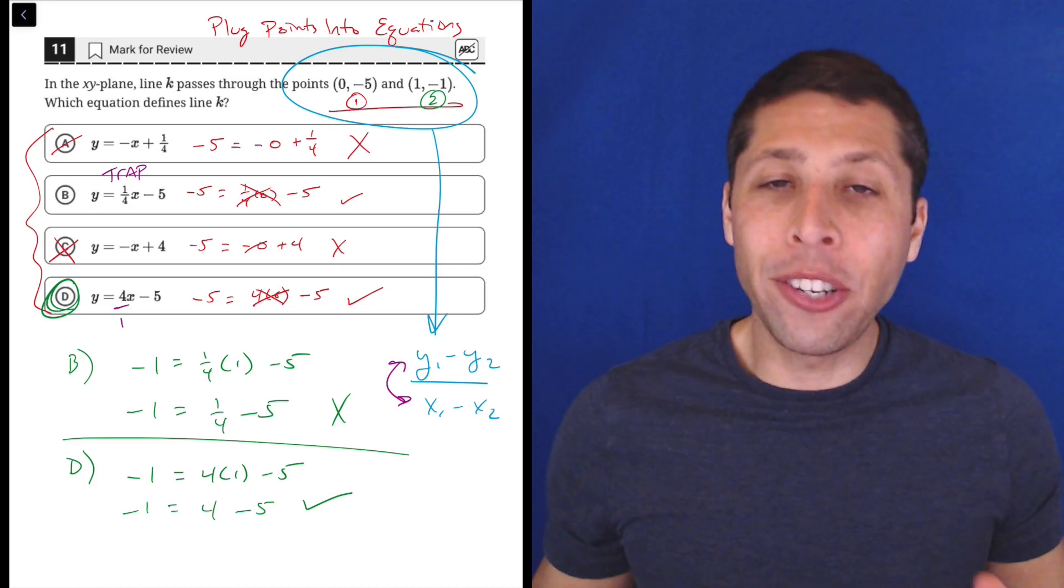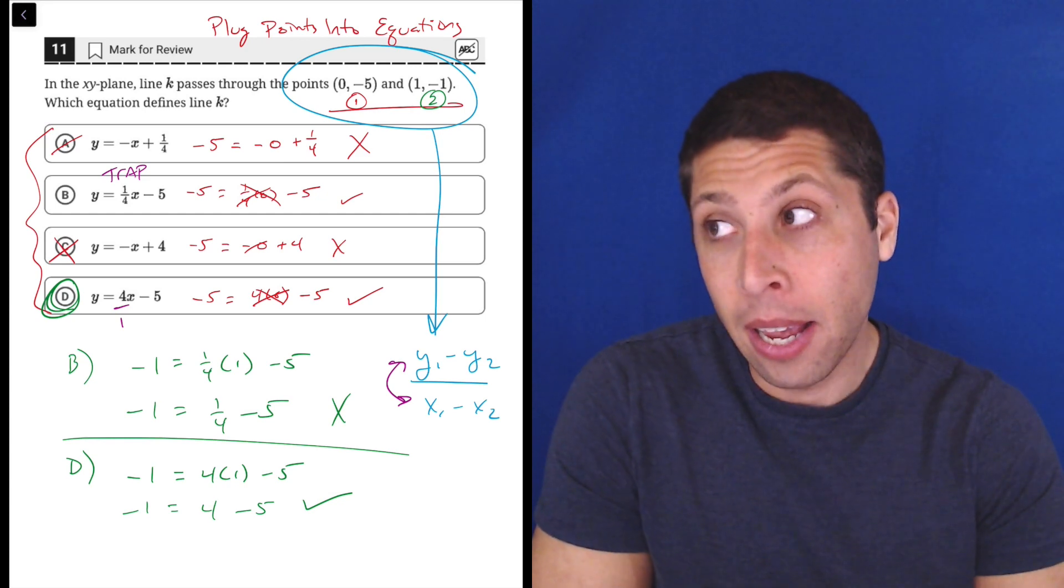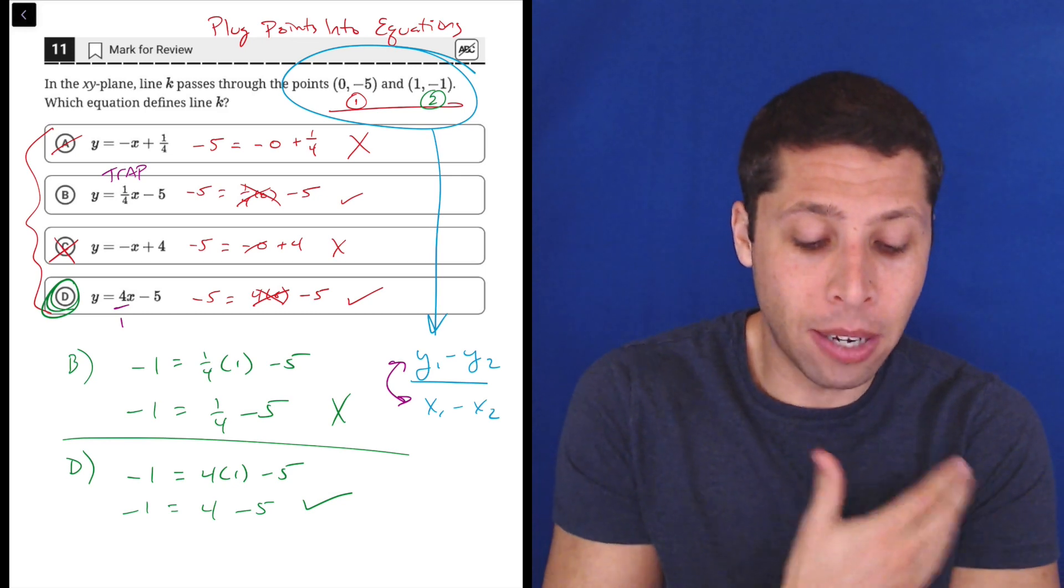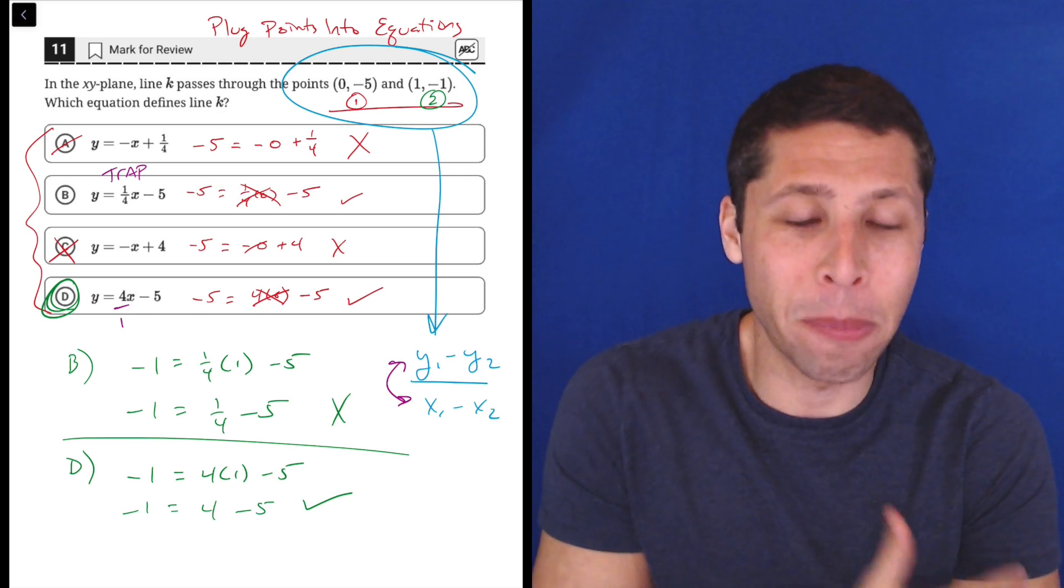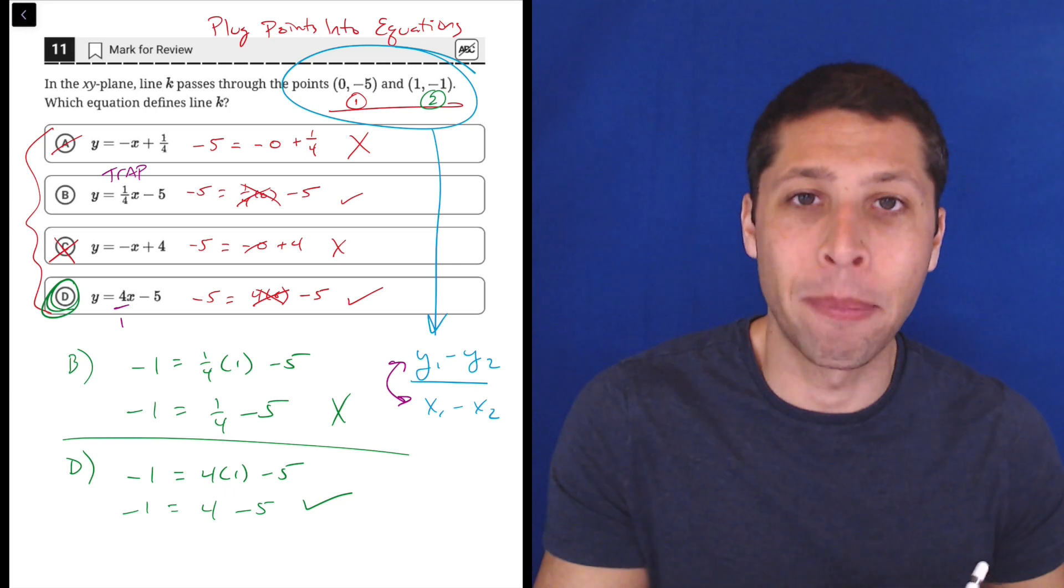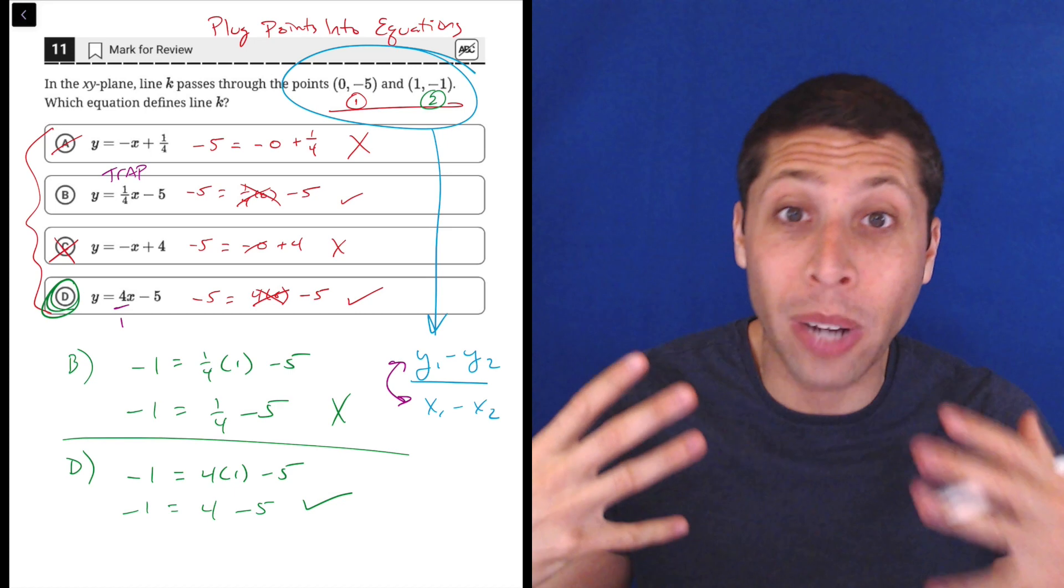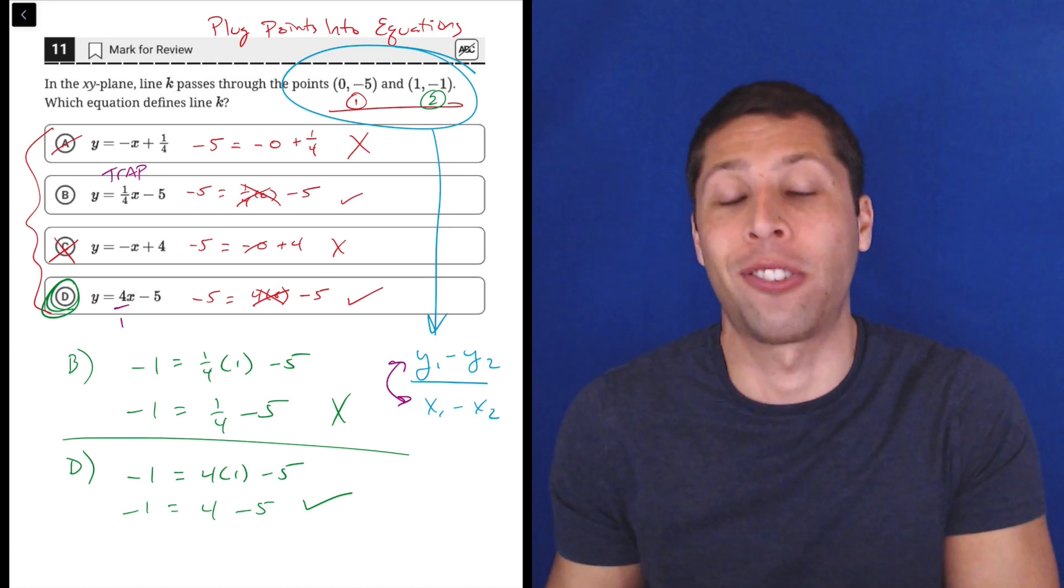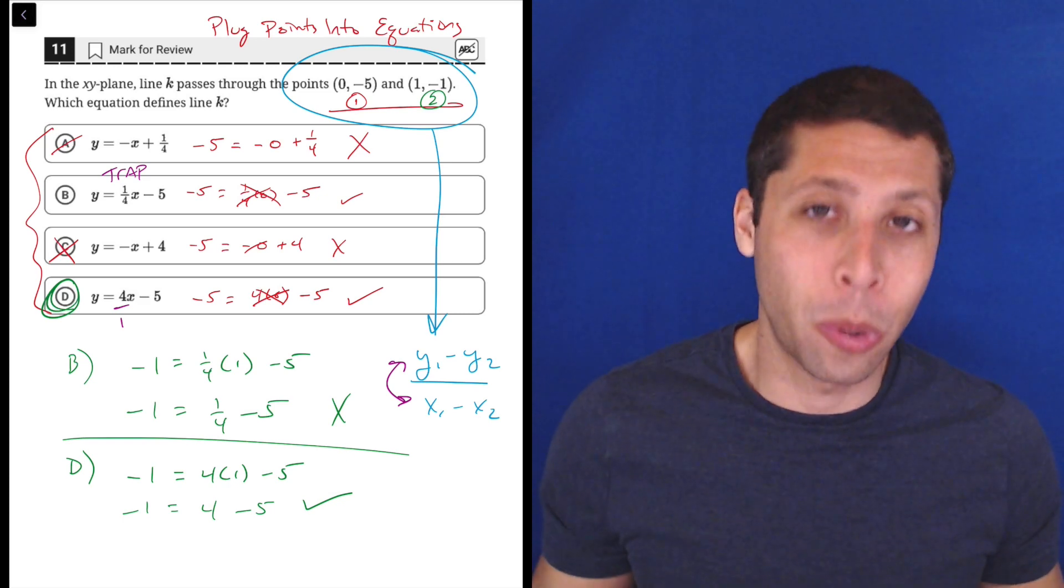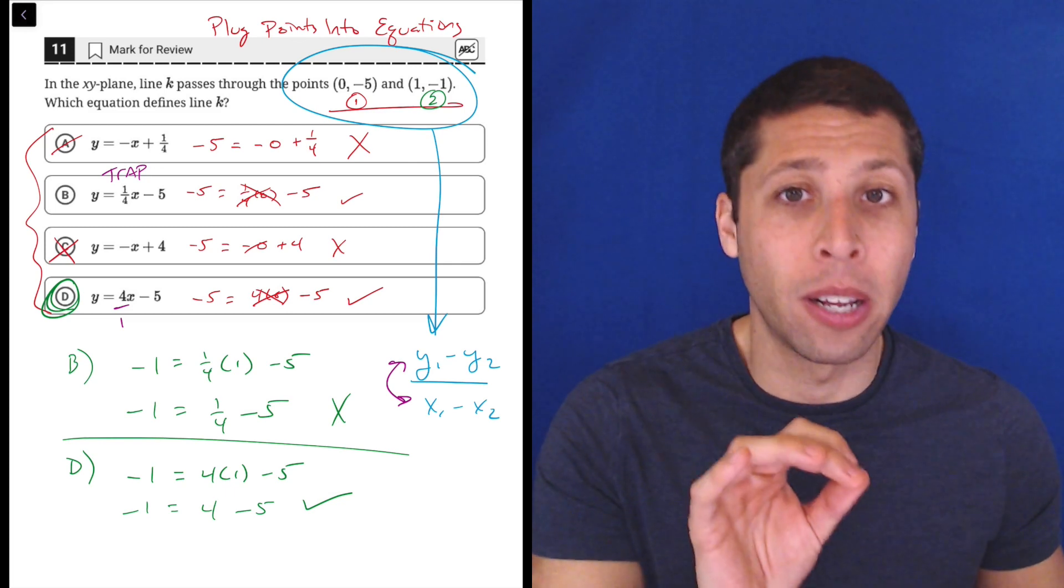So when we plug points into equations, that trap didn't really appear as a trap. We didn't eliminate it right away, but I didn't consider that choice really until I had done all the work for the next point. But the SAT knows that if you do some of this algebraically, there are some common mistakes that people make, especially with slope formula. So they're hoping you make them, and then they're going to put that wrong answer there so that when you do make the mistake, you don't notice because you're so confident that your answer is one of the answers. So you've got to just try whatever you can to not let them trick you like that.